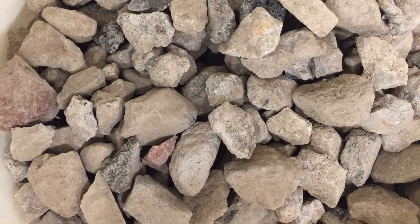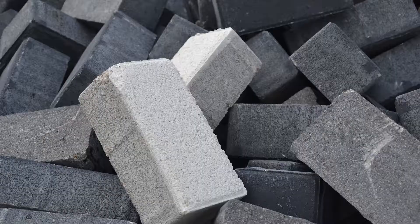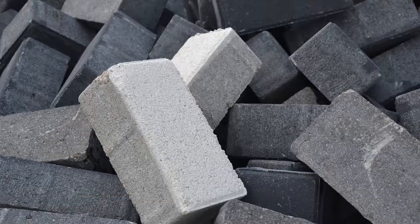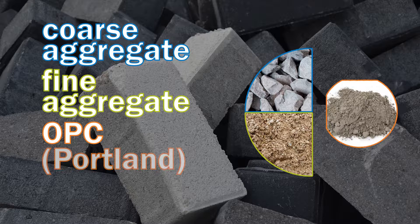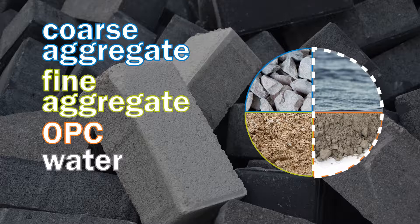Concrete is made from four different materials: there is coarse aggregate, which is gravel; fine aggregate, which is basically sand; OPC, which is ordinary Portland cement; and water. The water and the OPC combine together to make the glue to hold the other materials together, and that's what gives concrete its strength.